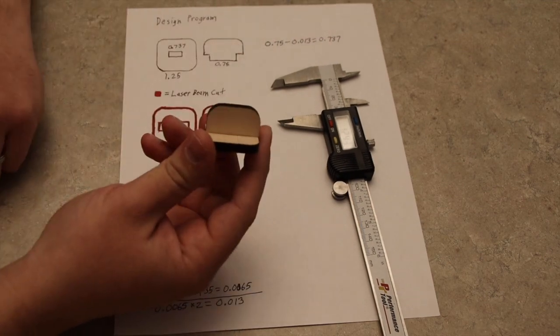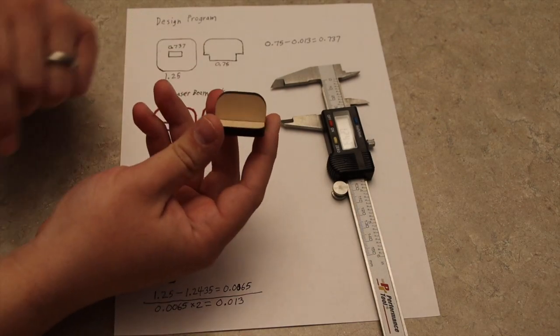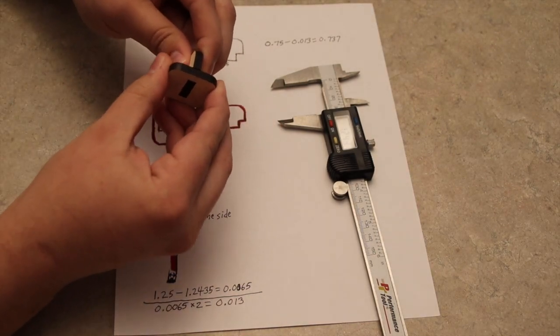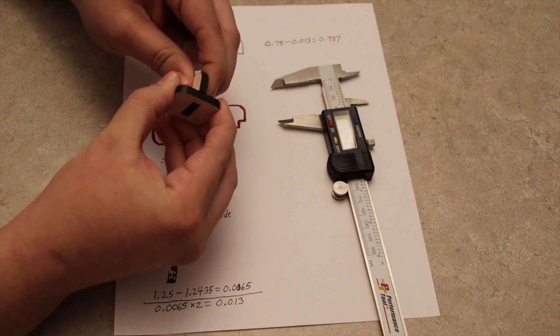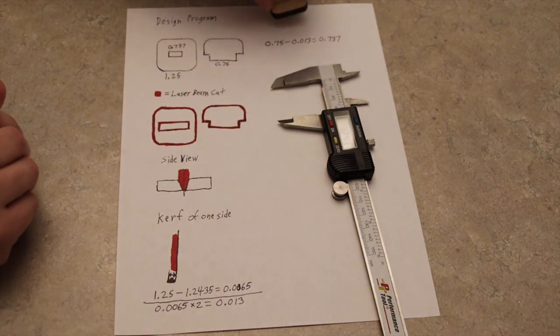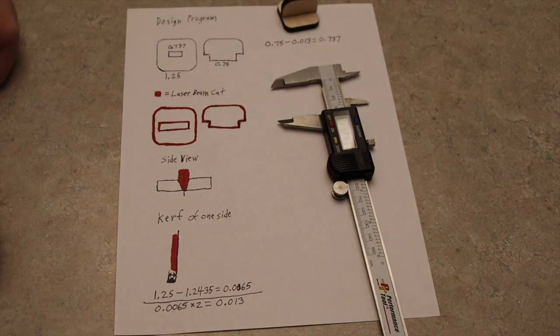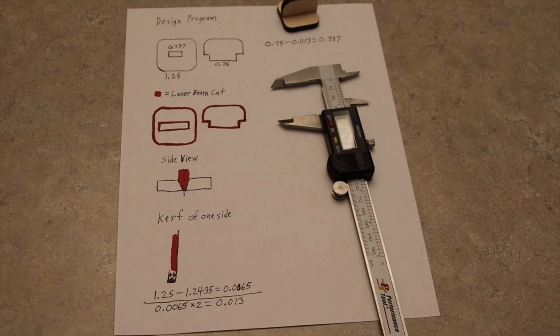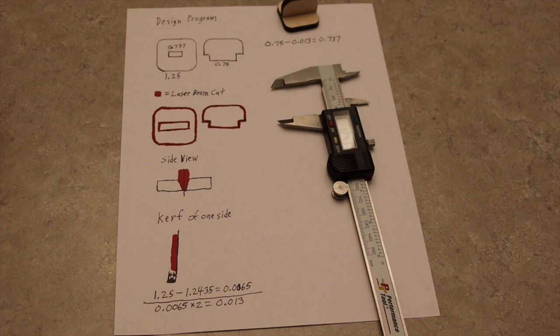As you can see, this is the design and I've adjusted for all the kerf. It's super tight—I could not pull this apart if I really wanted to. I'm pulling really hard. So that is the power of kerf, and hopefully that explains how to find it in the shortest way possible. If you need a more in-depth video on kerf and how to adjust or edit for it, I have that video link below.